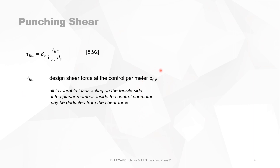Because this control perimeter is at B0.5, the surface that it creates is not that big, so the gain you have by subtracting it is not that large. In the version of Eurocode 2 from 2004 we had a control perimeter at 2 times D, so the influence was much larger.